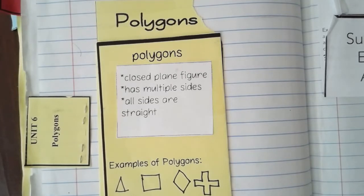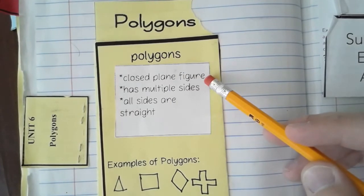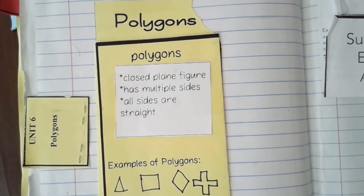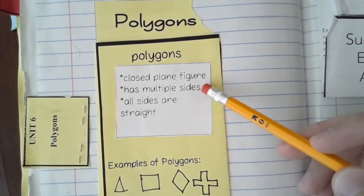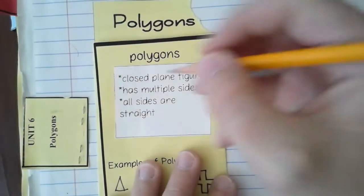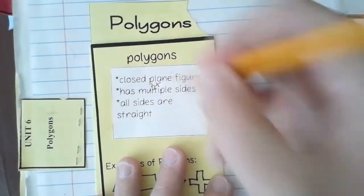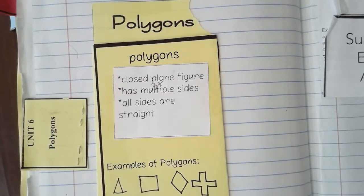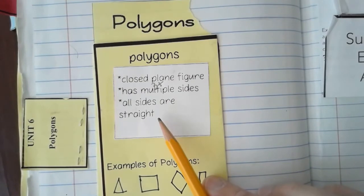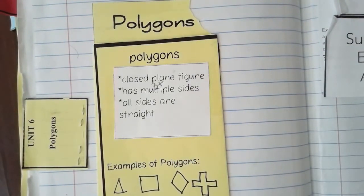A polygon is a very specific type of shape. A few criteria a shape has to meet to be considered a polygon: it has to be a closed plane figure, meaning there can't be any gaps or openings. It also has to have three or more sides. If it has one side it's just a line; two sides is an angle that can't be closed. And all sides have to be straight — no curved sides.